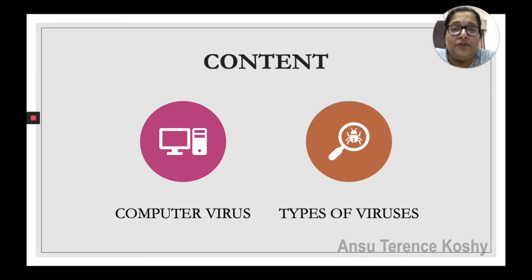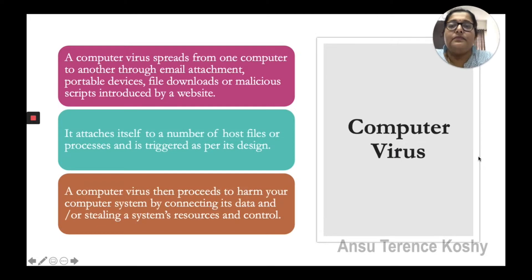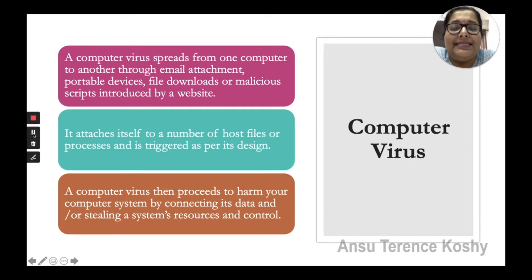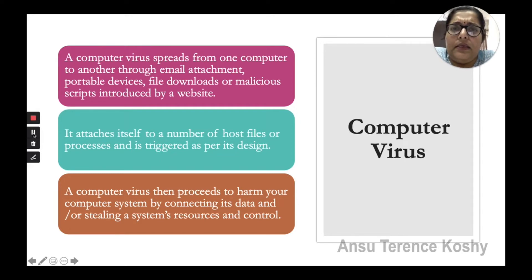In this chapter we are going to discuss what is a computer virus and the different types of viruses. A computer virus spreads from one computer to another through email attachments, portable devices, file downloads, or malicious scripts introduced by a website. It attaches itself to a number of host files or processes and is triggered as per its design.